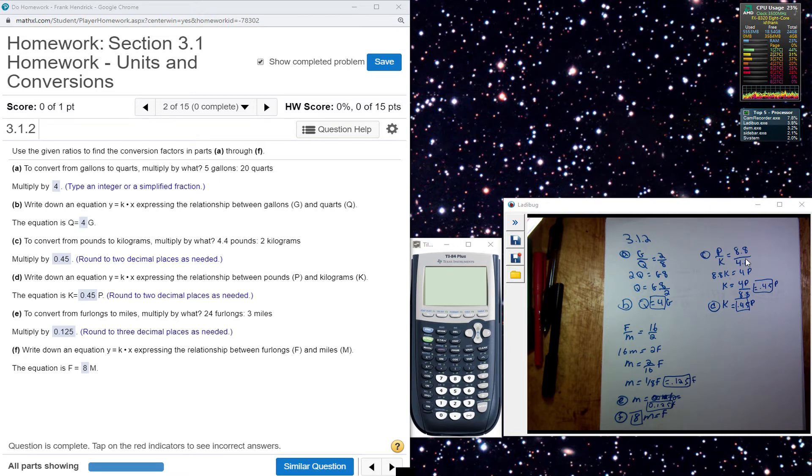Then they ask for the equation. So the equation for part D, K is equal to .45P.